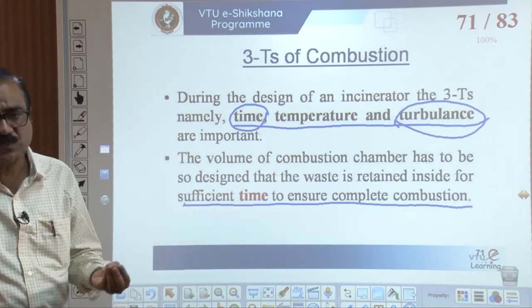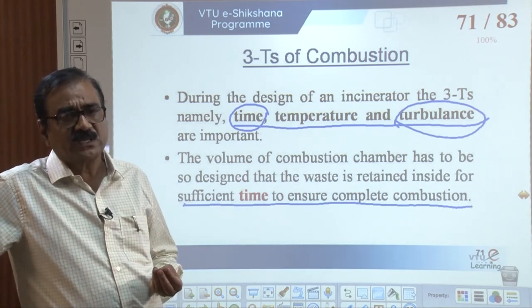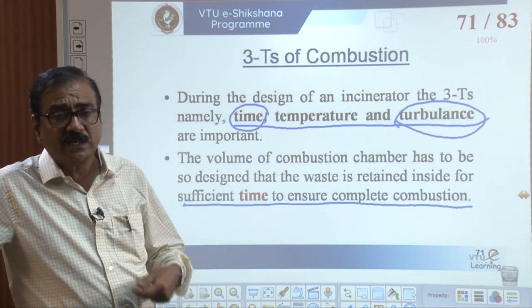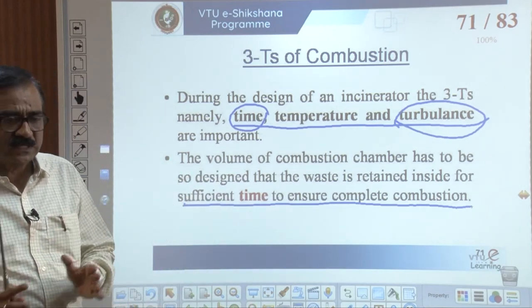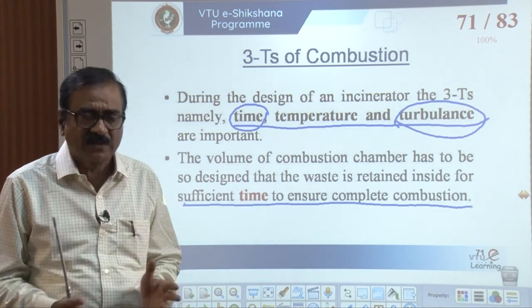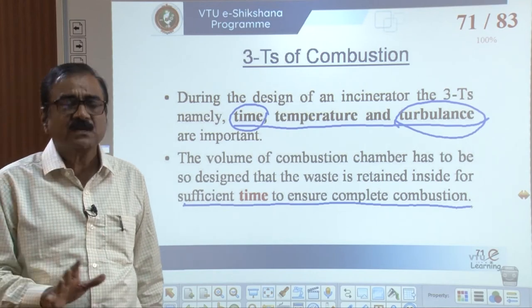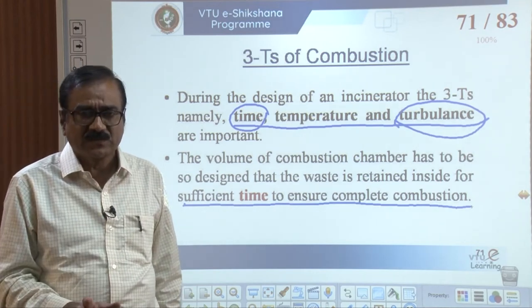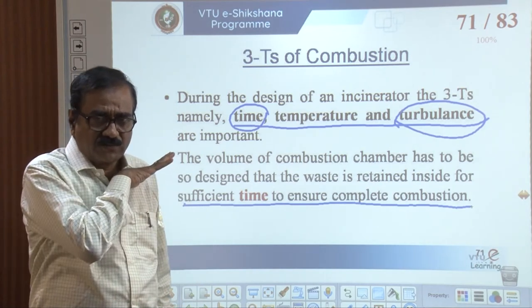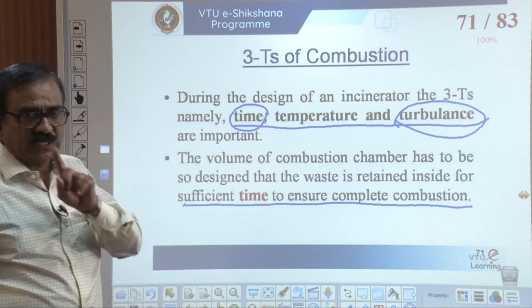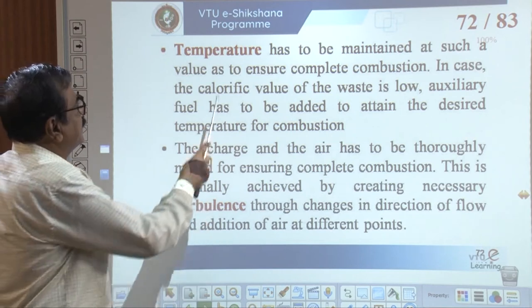The first T — time — means that sufficient time should be given so the municipal solid waste is retained within the combustion chamber long enough from the charging chute through the furnace until it goes out. The second T is temperature. The temperature must be maintained at a value that ensures complete combustion. If the calorific value of the waste is low, auxiliary fuel must be added, as discussed in the three-component diagram.